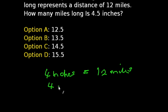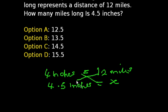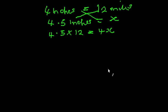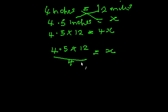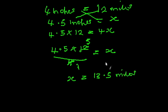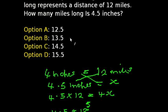We need to find how many miles 4.5 inches represents, so 4.5 inches equals X. We solve by cross-multiplying: 4.5 times 12 equals 4X. Taking 4 to the left: X equals 4.5 times 12 divided by 4. Dividing 12 by 4 gives 3, then 4.5 times 3 gives X equal to 13.5 miles. So the answer to this question is option B, which is 13.5.